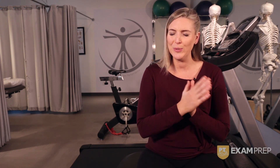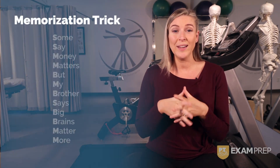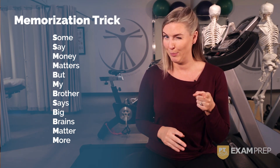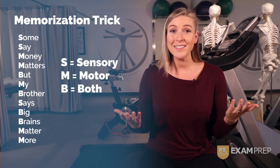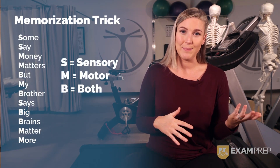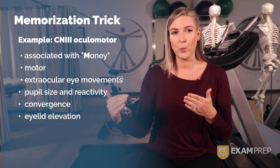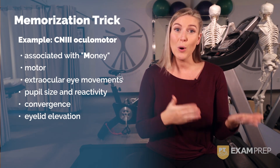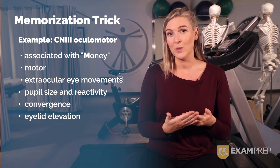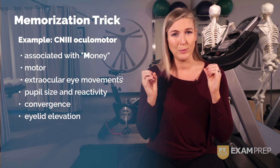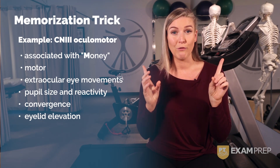Here's a memorization trick: 'Some say money matters, but my brother says big brains matter more.' S means sensory, M means motor, and B means both. For example, cranial nerve 3 corresponds to the third word — 'money' — which starts with M, so cranial nerve 3 is motor only. Cranial nerve 3 deals with extraocular eye movements, pupil size and reactivity, convergence of the eyes, and eyelid movement.